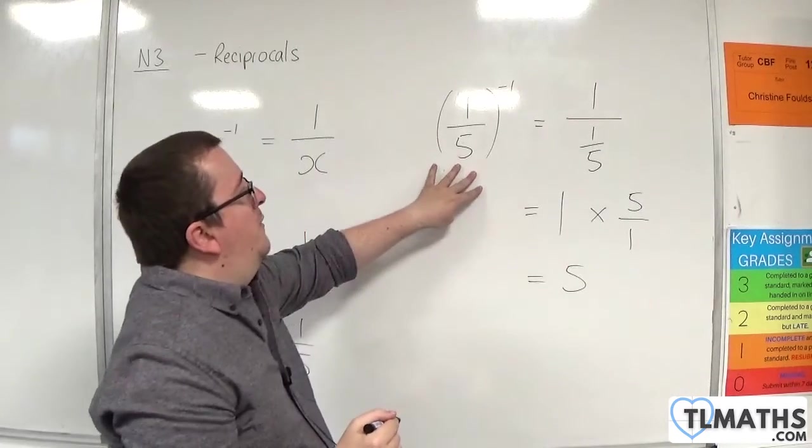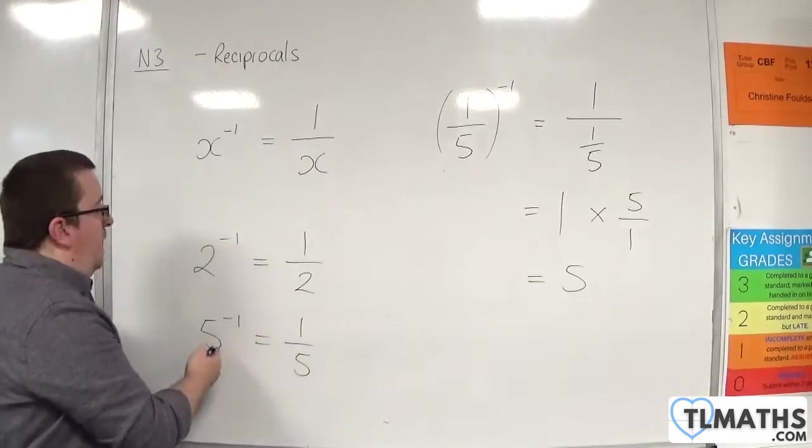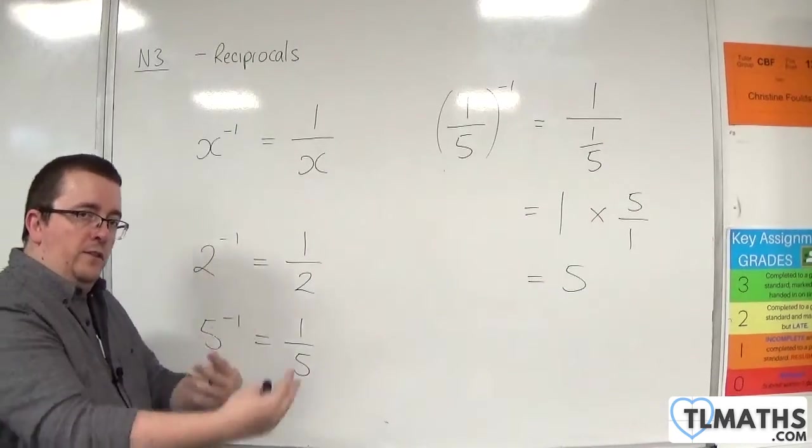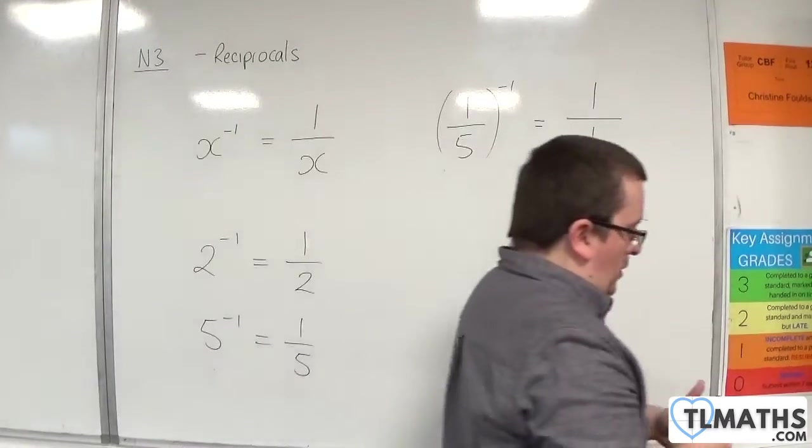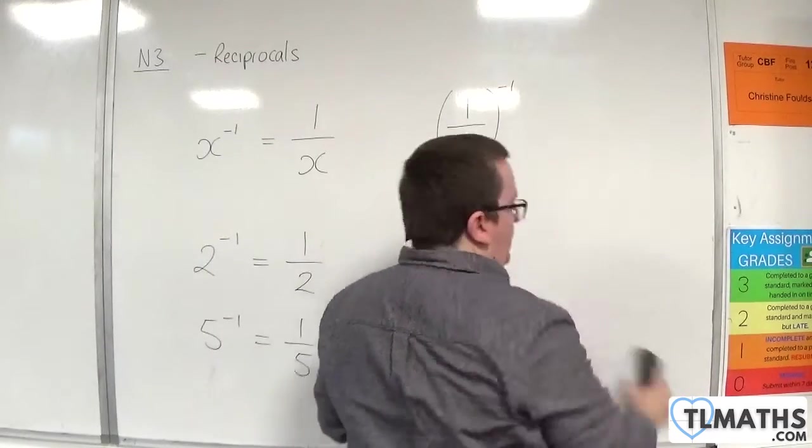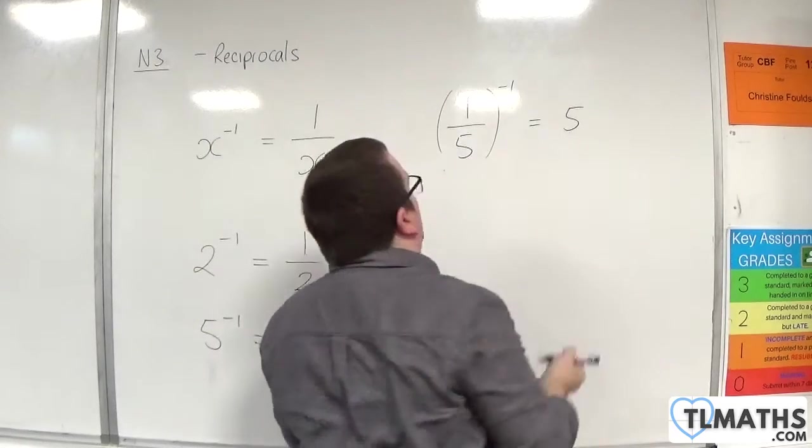The reciprocal of 1 fifth is 5, like the reciprocal of 5 is 1 fifth. So they revert. They inverse one another, essentially. We can write that down as 5 or 5 over 1.